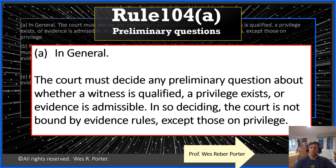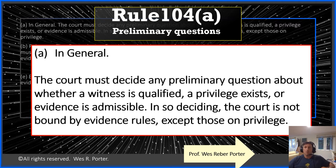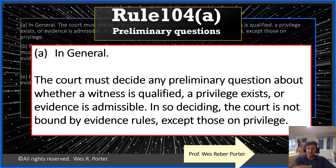An easy way to think about 104(A): when we subpoena a company for documents, they return them with a certification — an affidavit from a custodian of records under Article 9 saying these are business records under Rule 803(6). When the court rules on whether those exhibits are admissible, it considers that affidavit. That affidavit is technically an out-of-court statement offered for the truth — it's hearsay — but the judge can consider that certification in deciding whether the underlying documents are admissible. Under 104(A), the court can consider everything except privileged material, anything whatsoever, in deciding whether something is admissible.